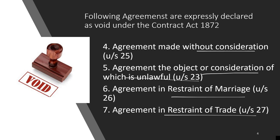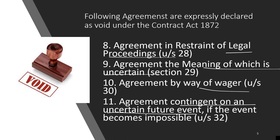Next are: agreement in restraint of marriage, agreement in restraint of trade, and agreement in restraint of legal proceedings. If you are stopping somebody from getting married, from carrying on a trade or profession, or from going ahead with legal proceedings, that is a void agreement. Also, an agreement the meaning of which is uncertain — if it creates ambiguity — is null and void under Section 29.